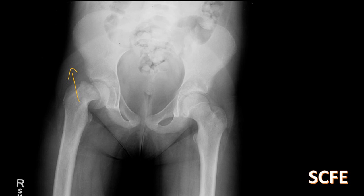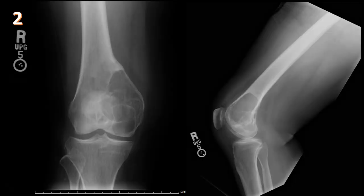This is slipped capital femoral epiphysis (SCFE) — a type 1 Salter-Harris injury to the growth plate due to microtrauma. It happens in adolescence, usually in overweight patients, and can be bilateral 20% of the time. Treatment is to pin the femoral neck and head as-is; do not reduce it first, because of the increased risk of avascular necrosis.